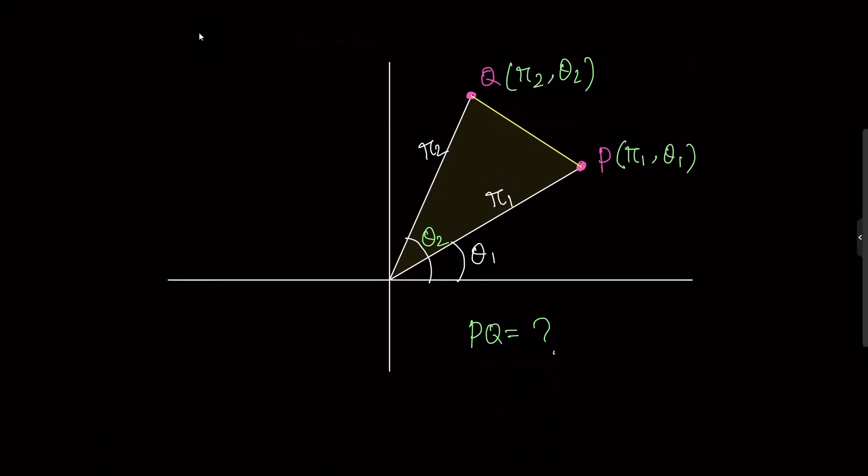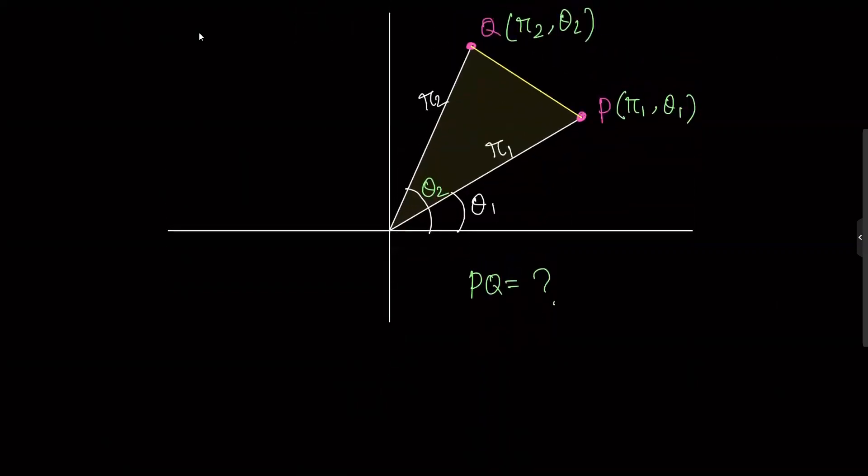Now we want to find the distance PQ between these two points in polar form. To solve this problem, we will use what I call a basic box approach. Let me show you how we do this basic box method.